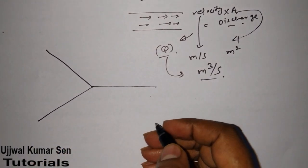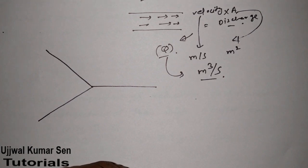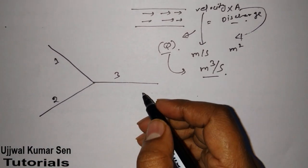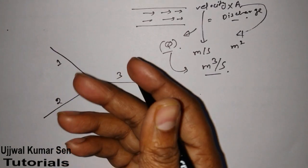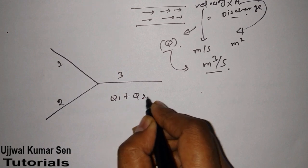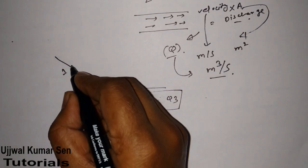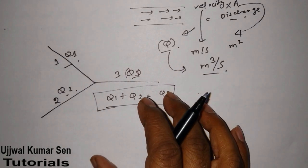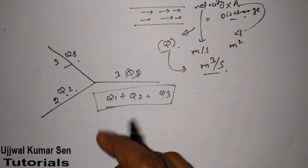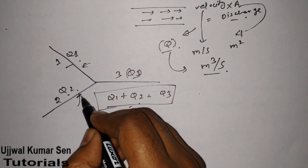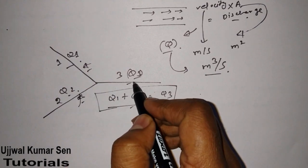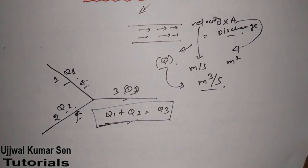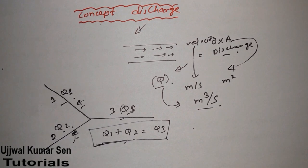There is a simple concept in flow through pipes: if you have pipe one, pipe two, and pipe three — or any number of pipes — then Q1 plus Q2 is equal to Q3. That means discharge from pipe one plus discharge from pipe two equals discharge from pipe three. We neglect friction losses here, because if we consider friction loss we cannot apply this equation directly, as we don't know how much head loss is occurring.